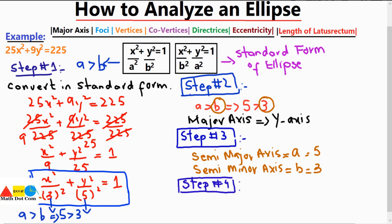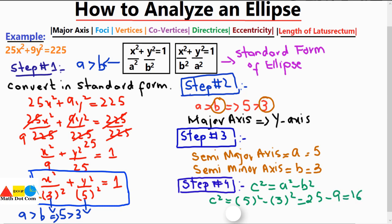In step number 4 we find c, the focal length, using the formula c² = a² − b². Substituting, c² = 5² − 3² = 25 − 9 = 16, so taking the square root gives c = 4. With a, b, and c known, we can find the coordinates of the foci, vertices, and co-vertices.